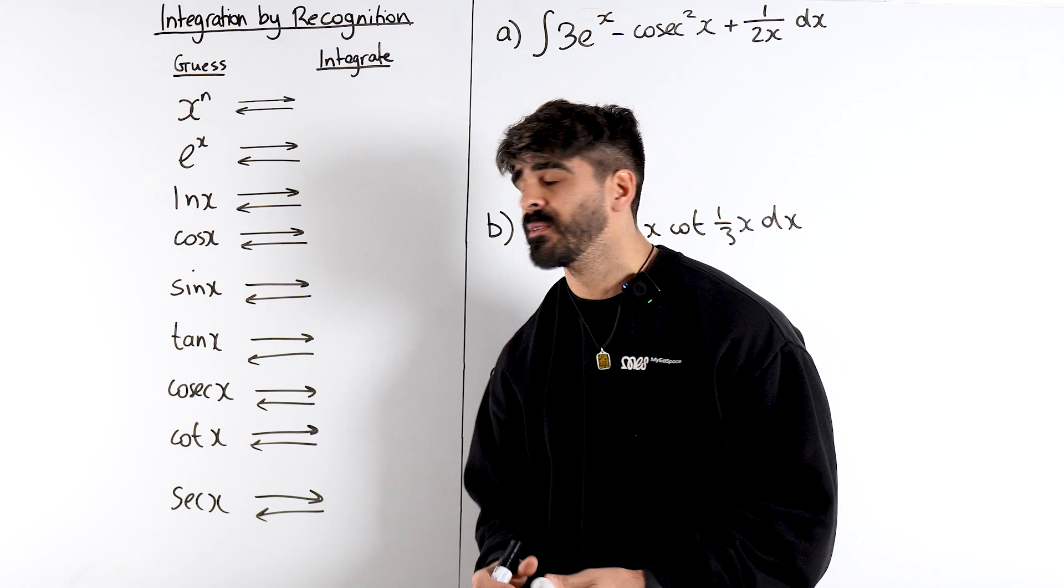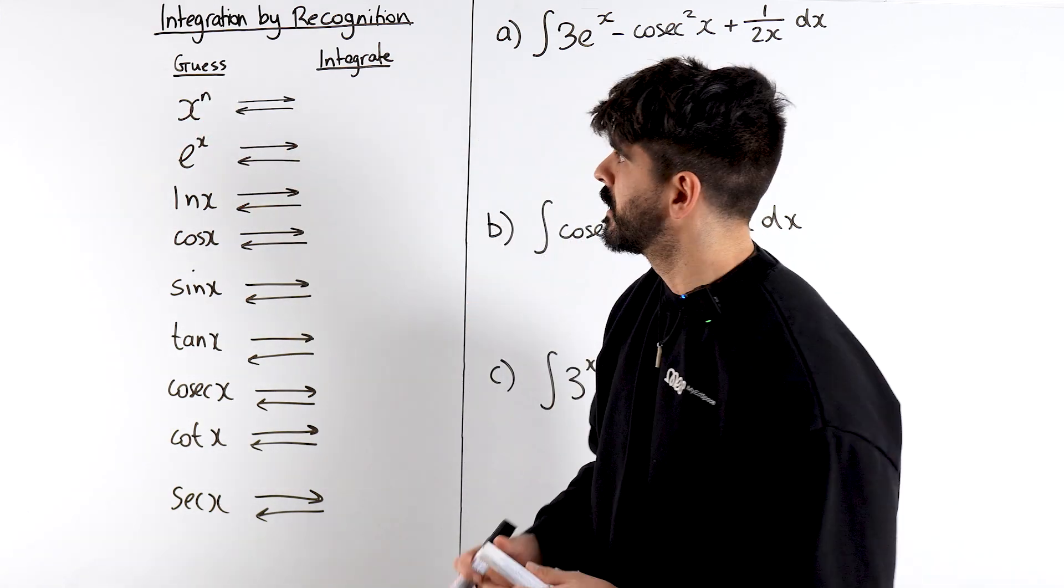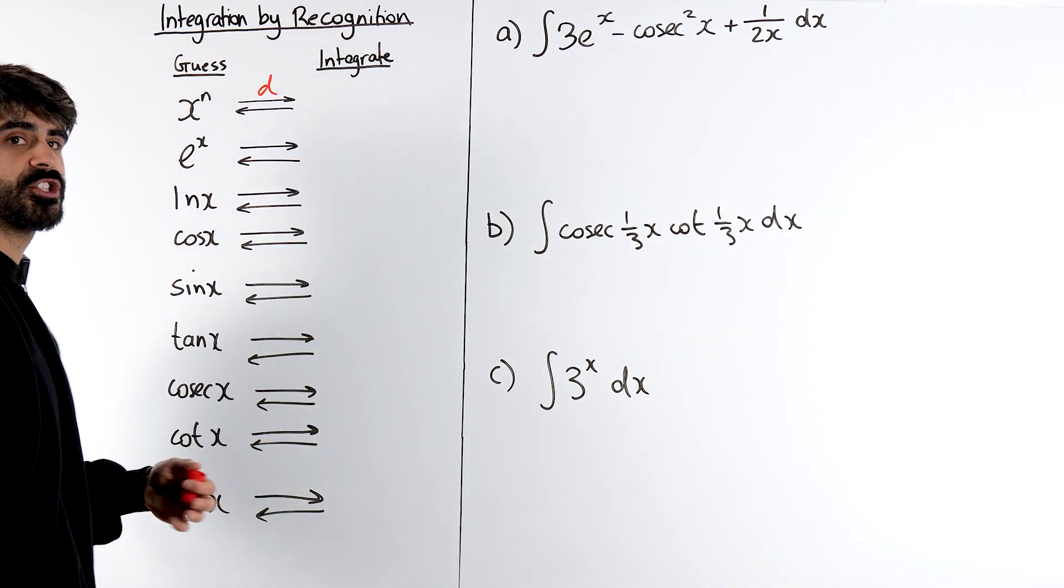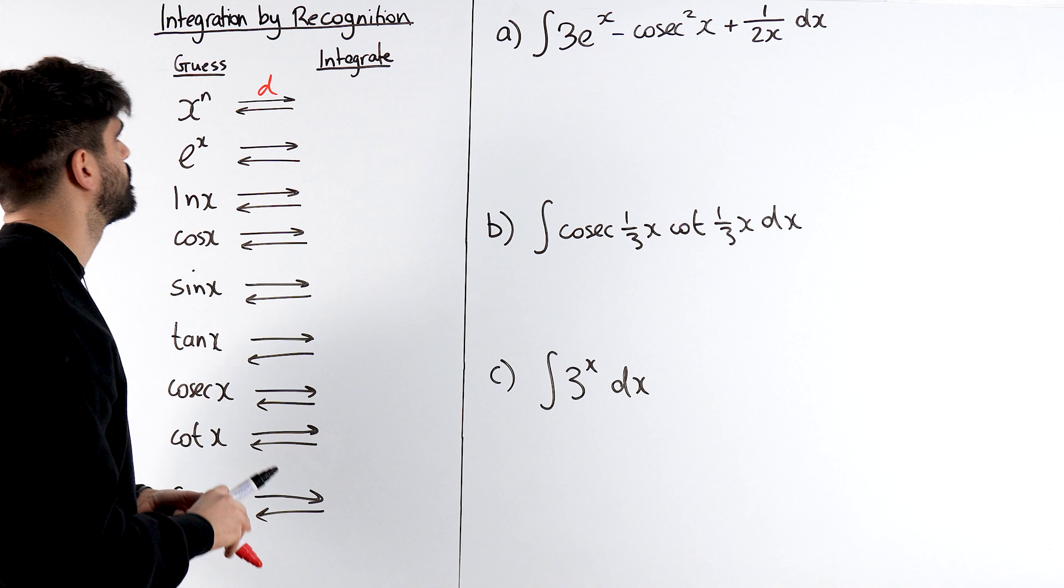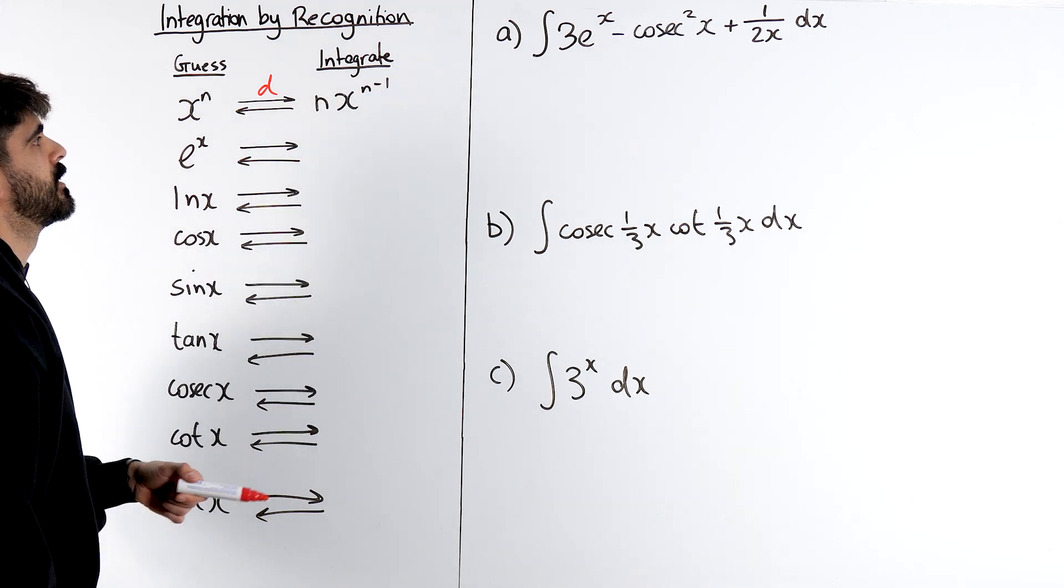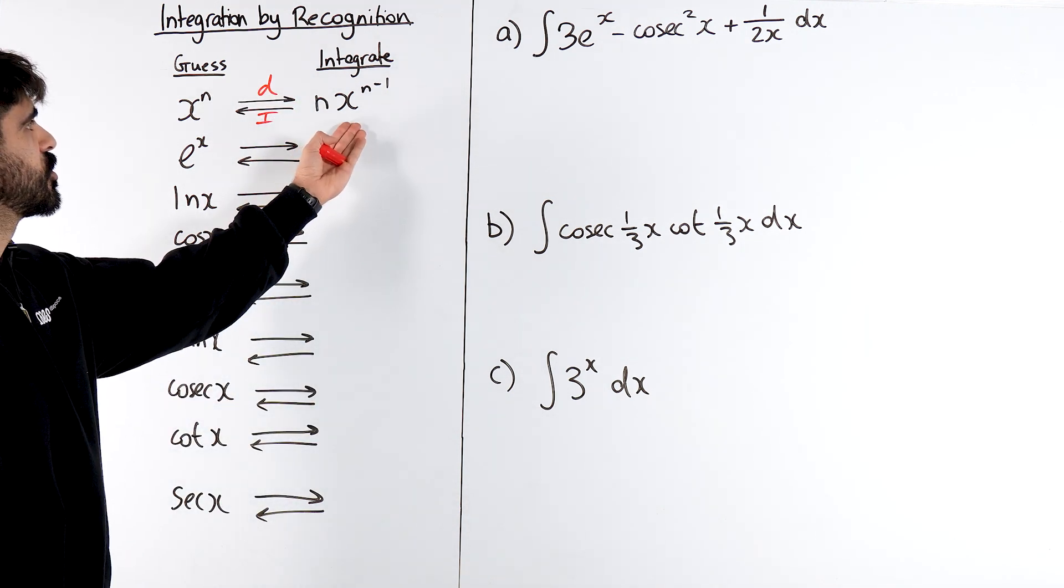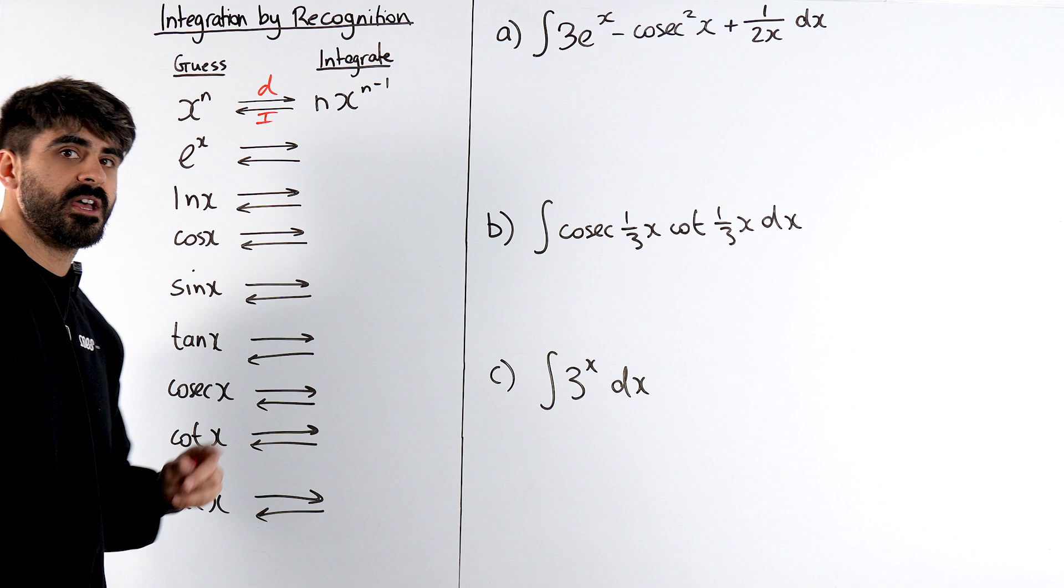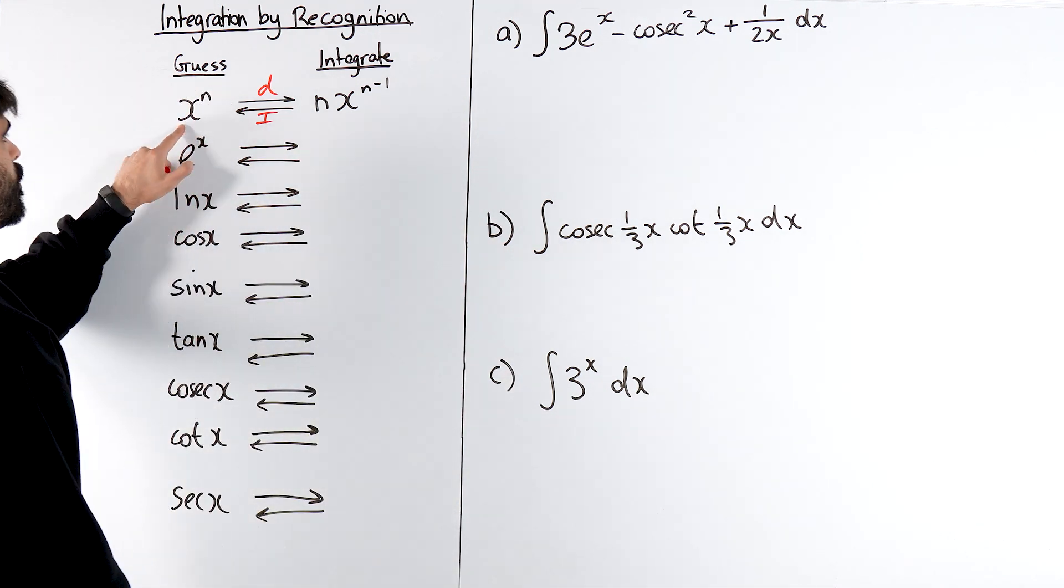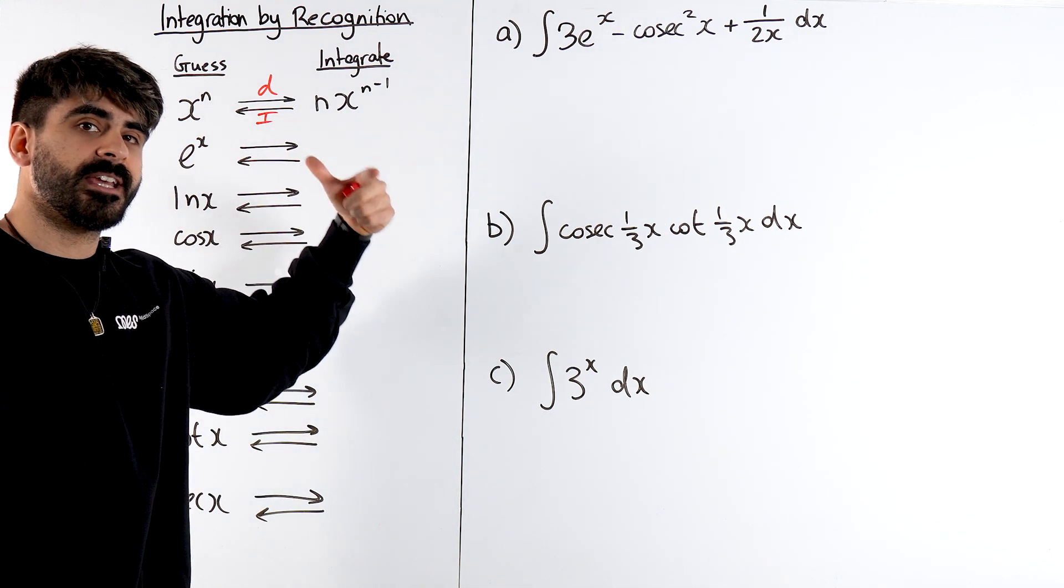If I have a look at something like x to the power of n and we differentiate that, you bring down the power and then knock one off the power. That means something like this integrates to just x to the power of n. So power functions integrate to power functions but it's very important we recognize that the power will go up by one.